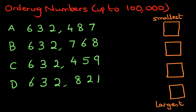The question is written out and we've got four options: A, B, C, D. For A the number is 632,487. B is 632,768. C is 632,459. And D is 632,821. The question on the right hand side asks us to arrange these in order from the smallest to the largest number.